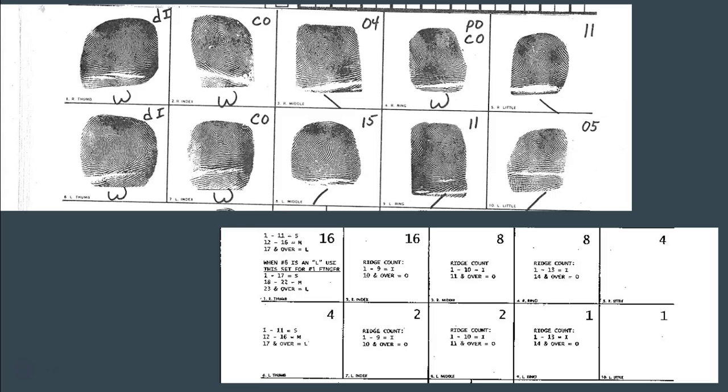Let's do another example. Looking at a new set of fingerprints, we're going to do the primary again — numerator from even-numbered fingers with whorls, denominator from odd-numbered fingers with whorls. Go ahead and pause the video now and try to figure out the primary for this set yourself, then restart the video to check your answer.